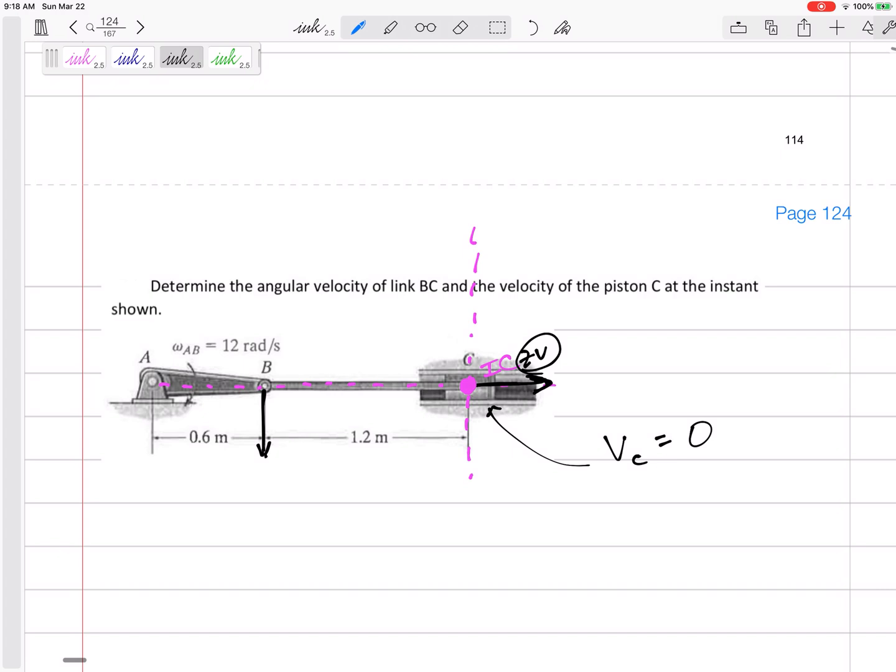Or you could say, okay, well, my RB is 1.2. My RC, how far is C away from the instantaneous center, is zero. And so when you did V equals R omega, if your R is zero, then your velocity is zero. Okay. But the omega is not necessarily zero.